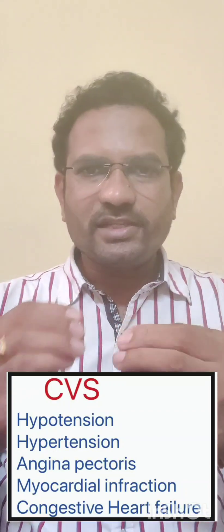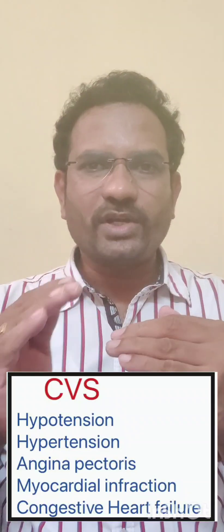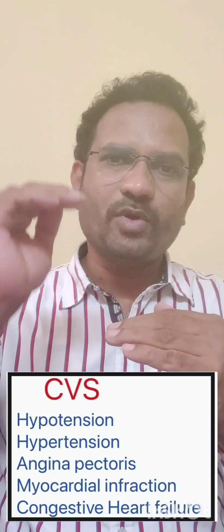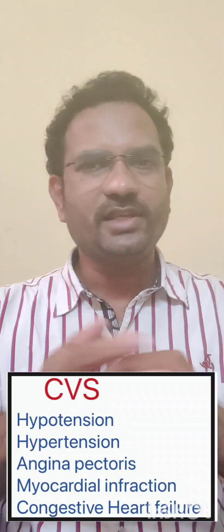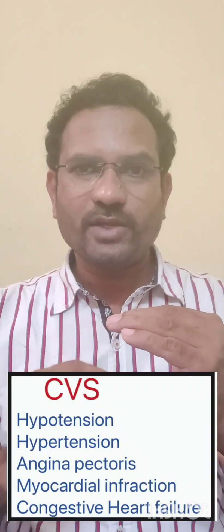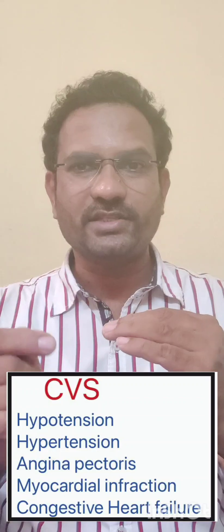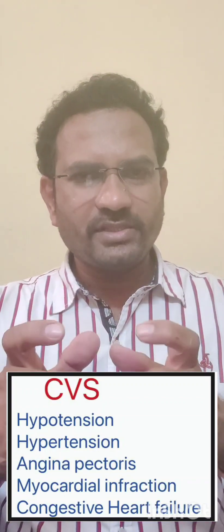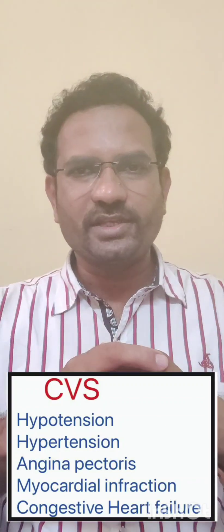Understand in simple words: normal blood pressure is 120/80. Hypertension means anything above 140/90 is considered as hypertension. Hypotension means anything equal to or below 60/90 is considered as hypotension. When you understand it in simple terms, the subject becomes very easy.